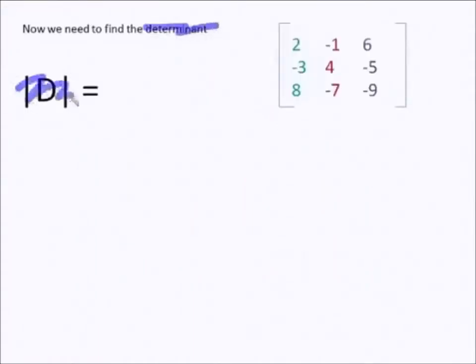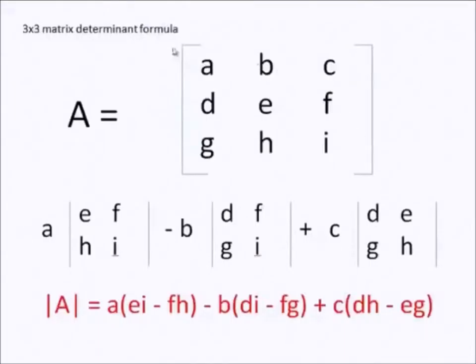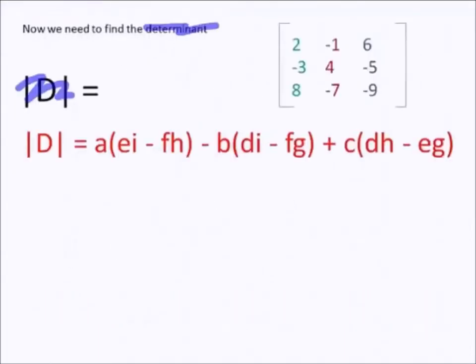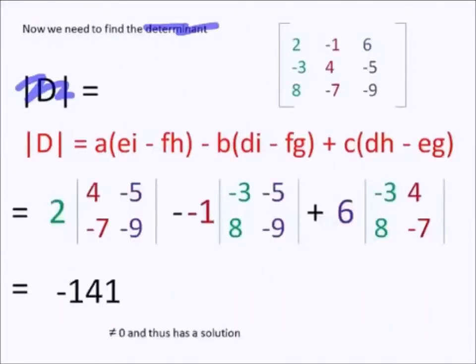Next, we find the determinant. We find the determinant by simply using this formula and substituting. So, using the formula, we get our minors and we can calculate the determinant. As you can see, it doesn't equal zero, and we can find a solution.